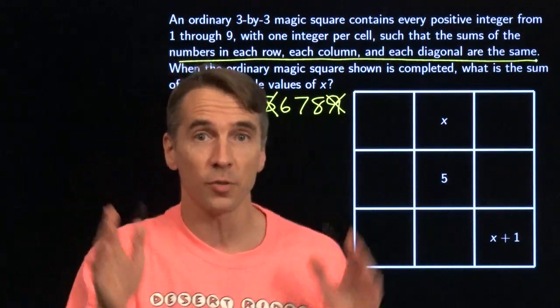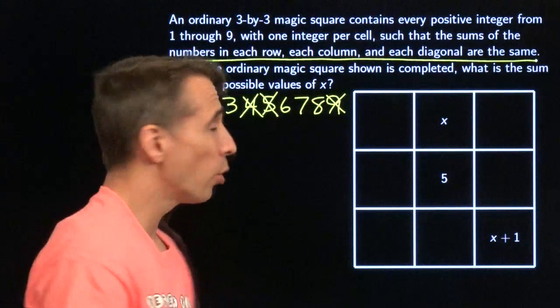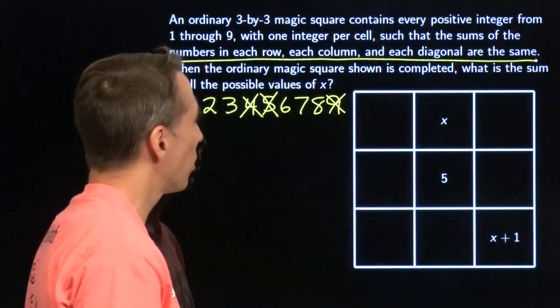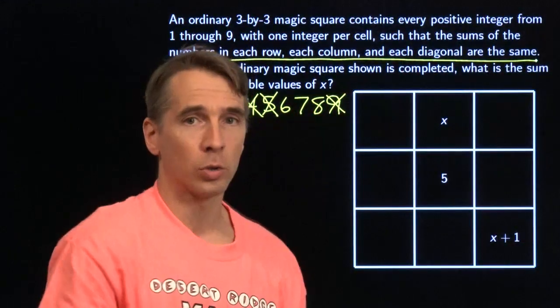But I do know what the sum of all the numbers in the whole magic square is. That's just the sum of the numbers from 1 to 9. If you have 1 and 9, you get 10, 2 and 8 gives us 10 more, that's 20, 7 and 3 gives us 30, 6 and 4 gives us 40, and we add in that last 5, we got 45 for the whole grid.